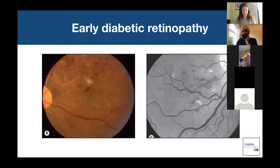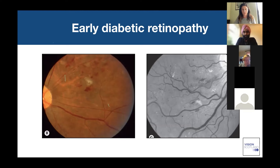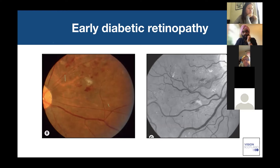When seeing a patient with diabetic retinopathy, it's important to have a systematic approach so you don't miss salient findings on fundal examination. I typically examine the optic nerve first, then follow the arcades — superior temporal, inferior temporal, nasal, and inferior nasal. As you look at the vessels, you're looking for beading, irregularity, hemorrhages between the arcades, and cotton wool spots.